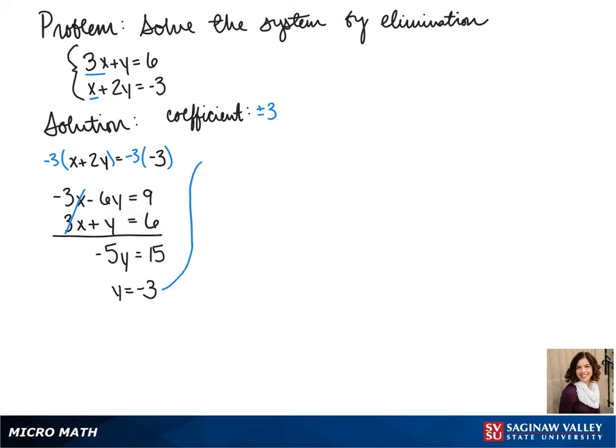Now we take that negative 3 and plug it into one of our equations. Since the x in our second equation doesn't have a coefficient, and we're trying to solve for x, this one would be the easiest. So when we plug in our negative 3, we get x minus 6 equals negative 3. We add 6 to the other side, and we get x equals 3.